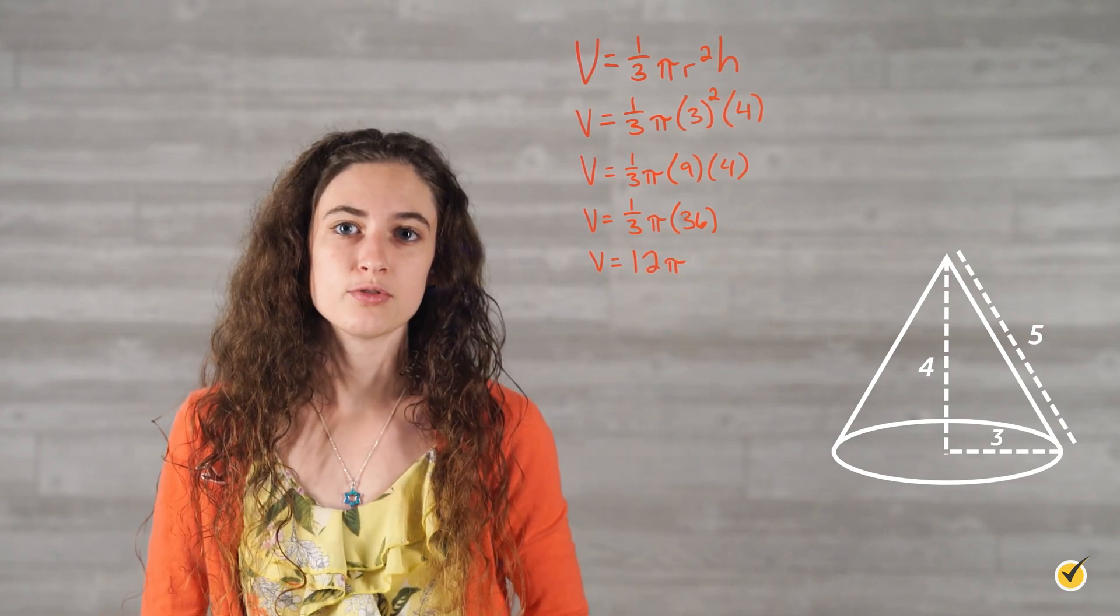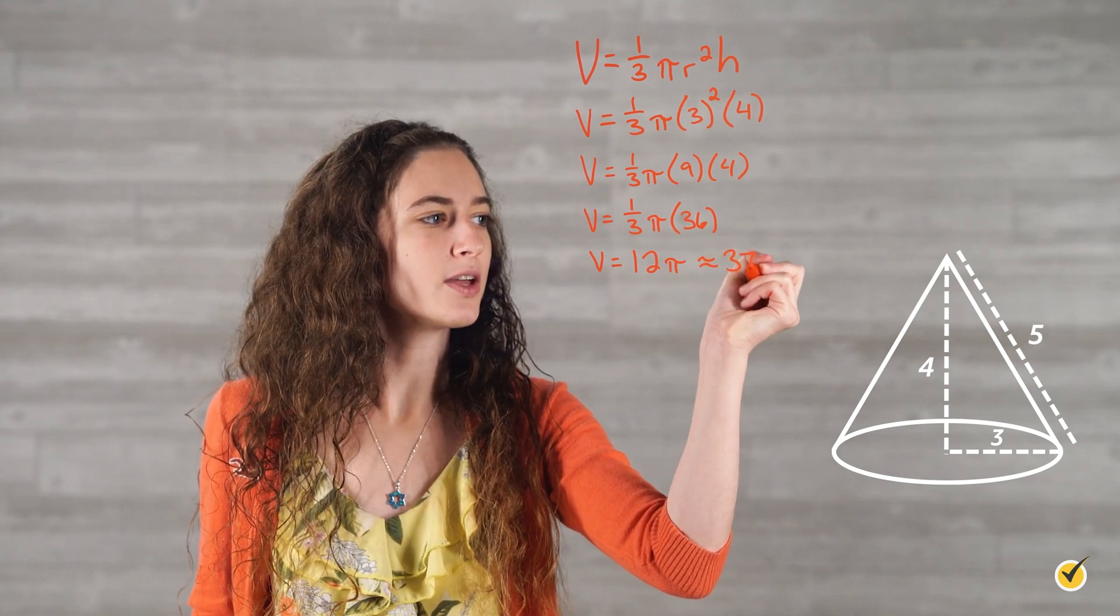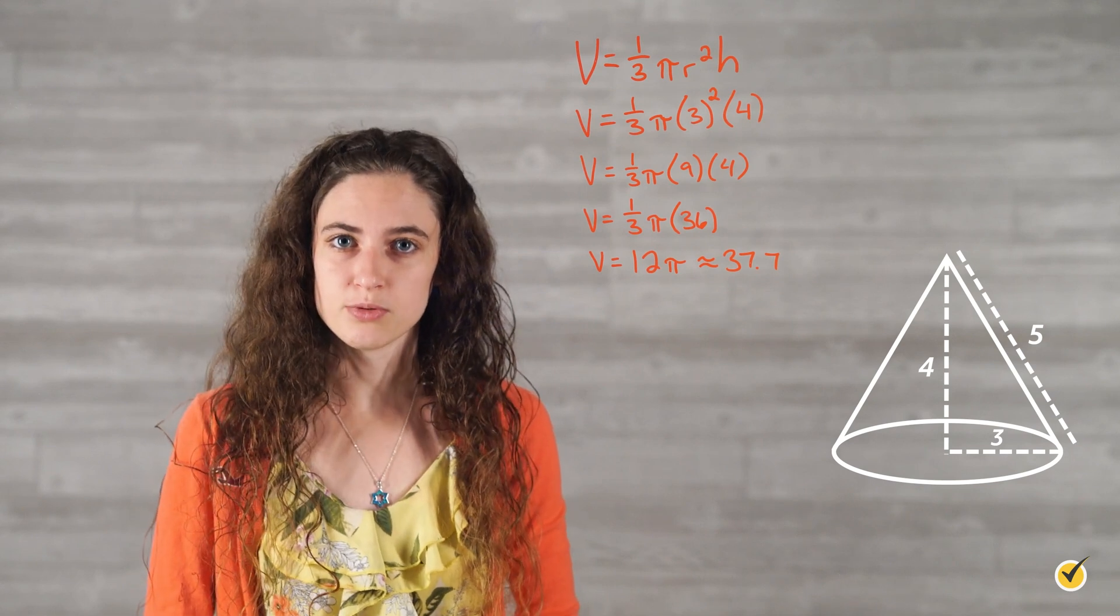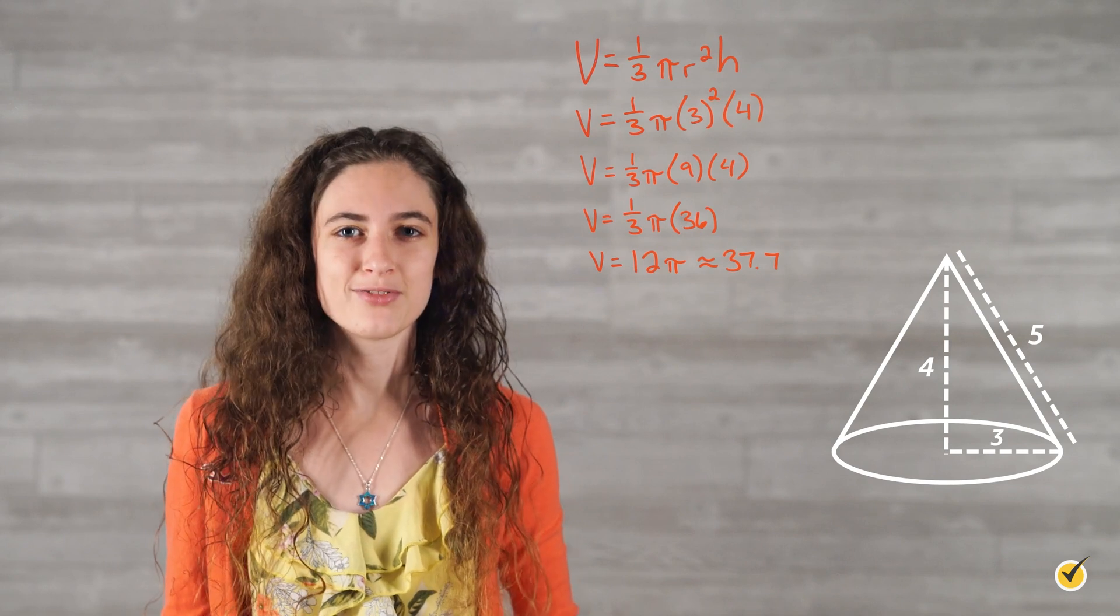The volume of this cone is 12 pi, or approximately 37.7 cubic units. Notice that volume is measured in units cubed. Think centimeters cubed, inches cubed, feet cubed, or cubic feet.